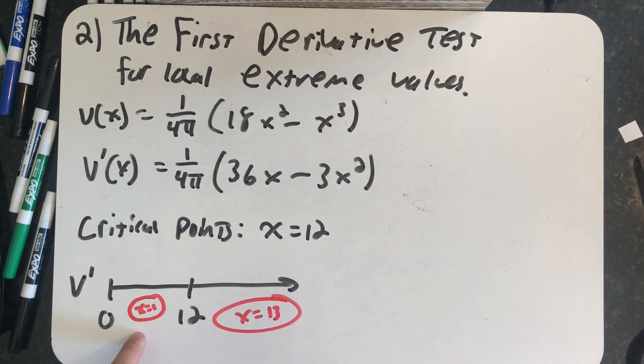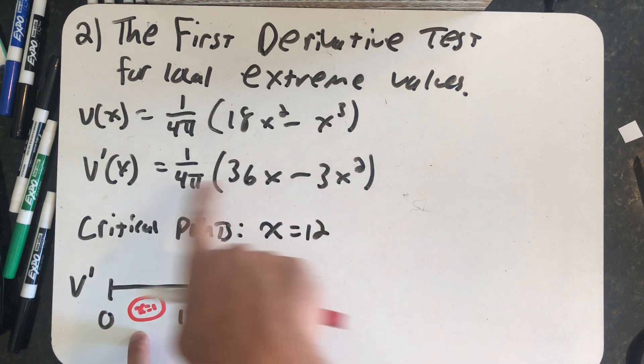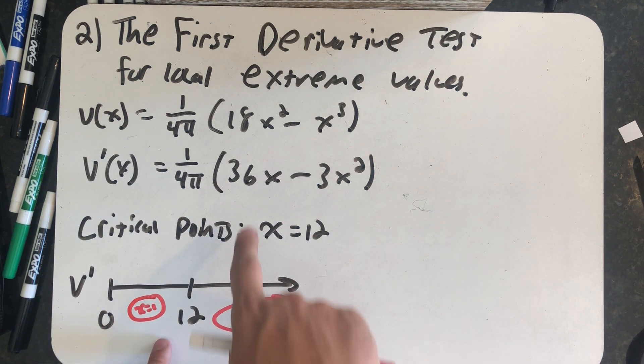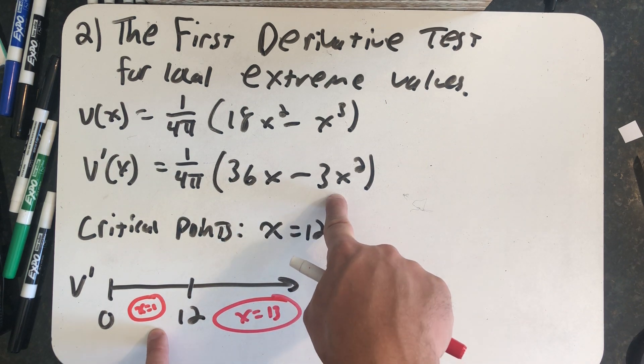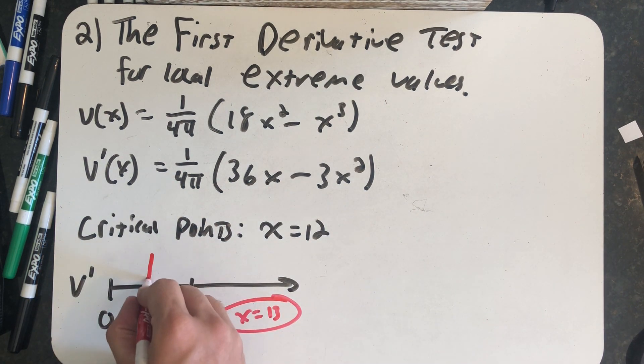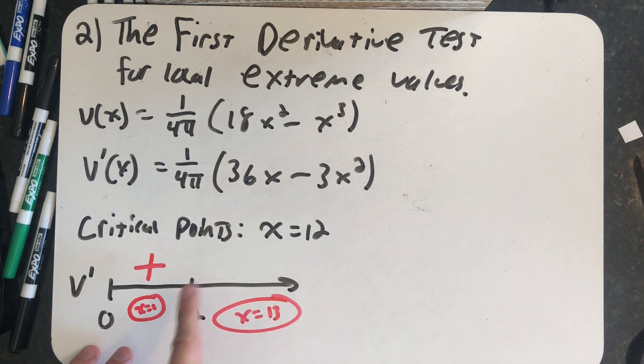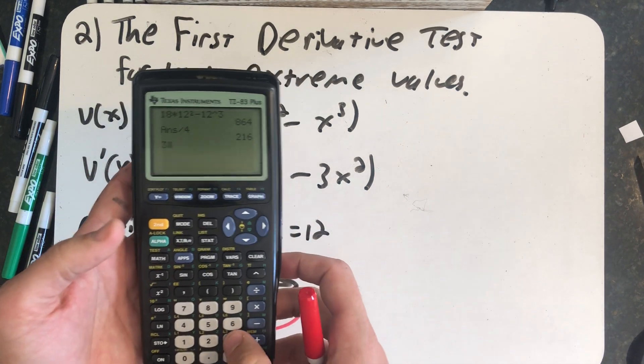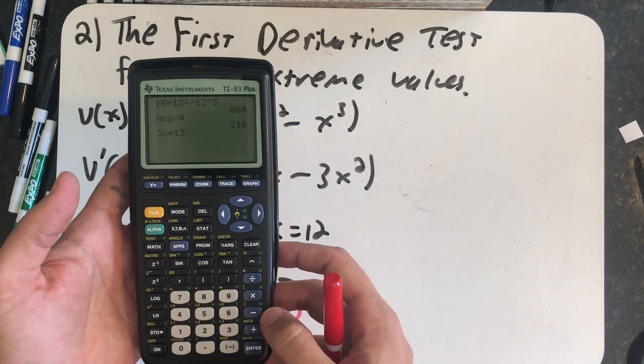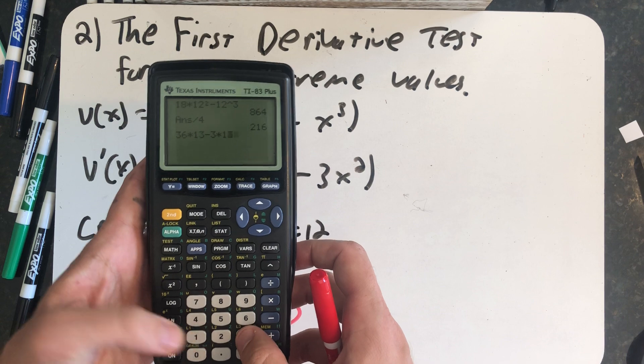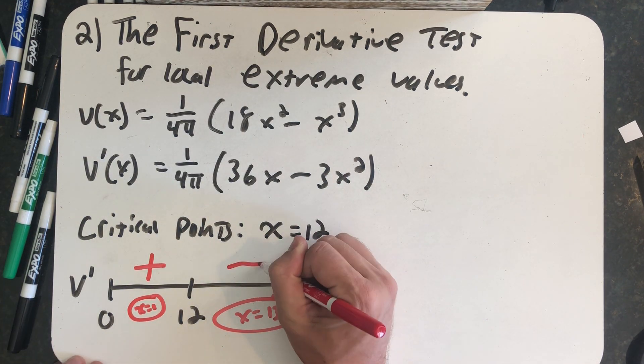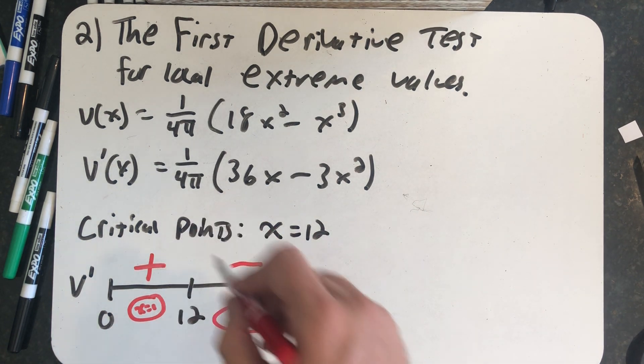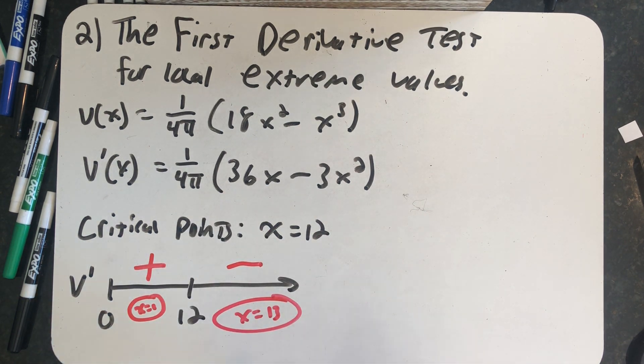So x equals 1 is pretty easy. Let's plug that into the first derivative because we're looking for the sign of the first derivative. In here, I would get 36 minus 3 is a positive 33 times a positive number is positive. So I am increasing until I get to 12. Now let's plug in x equals 13. So I have 36 times 13 minus 3 times 13 squared. Minus 39 times a positive is a negative. So my first derivative increases and then decreases forever, making that a maximum.